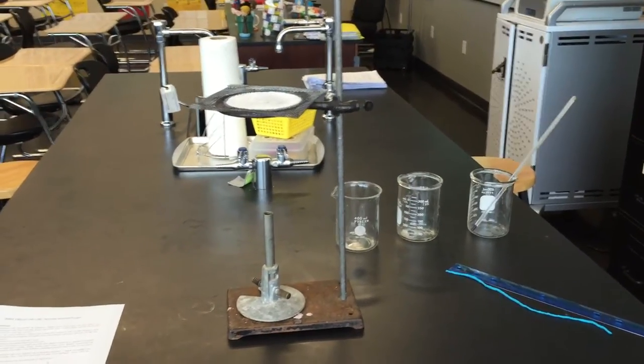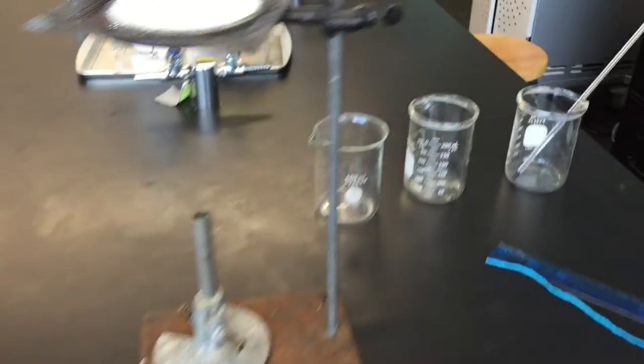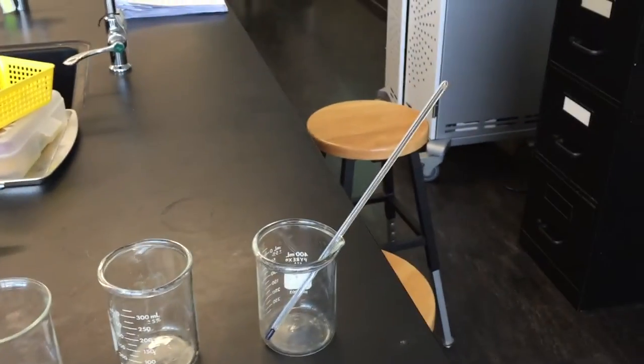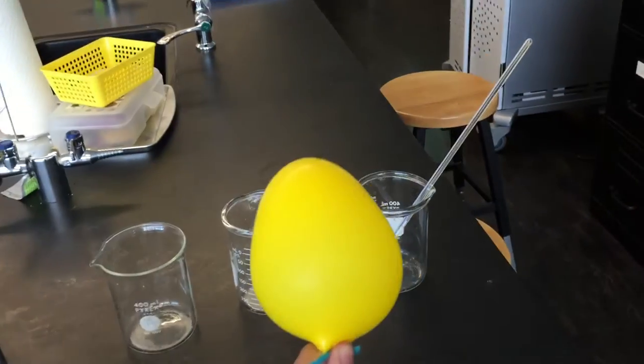All right, so this is our Charles Law Lab setup. I have an iron ring stand, iron ring, wire gauze, Bunsen burner, three beakers, a thermometer, a piece of yarn, a ruler, and a balloon.